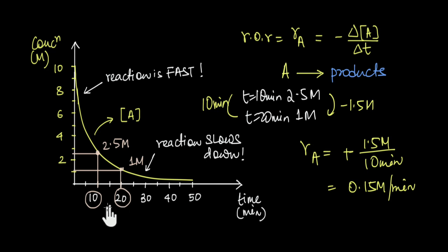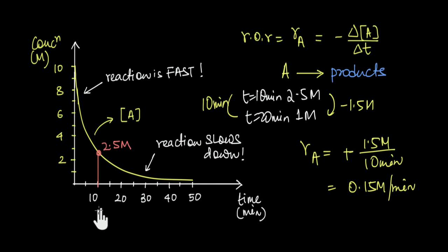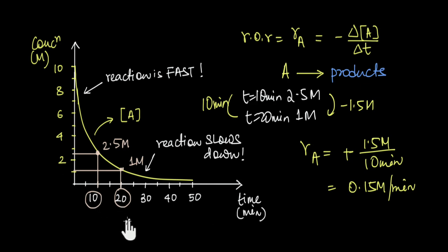Similarly, if I wanted the average rate between 10 and 15 minutes, I just need the concentrations at those two points. However, if I wanted the rate of disappearance of A at exactly 10 minutes — the instantaneous rate — how do I calculate the change in concentration divided by change in time at a single instant? It turns out there's an interesting way to do that. Let's look again at how we calculated the average rate between 10 and 20 minutes.